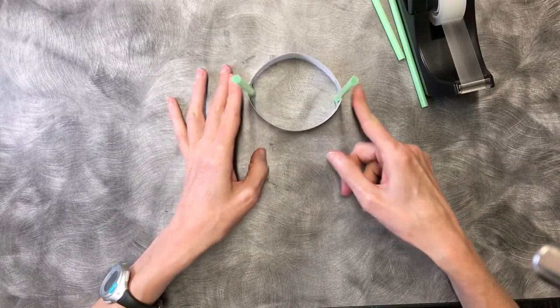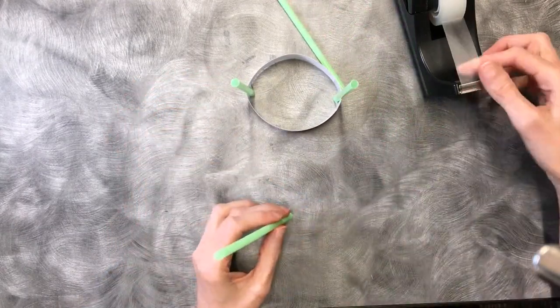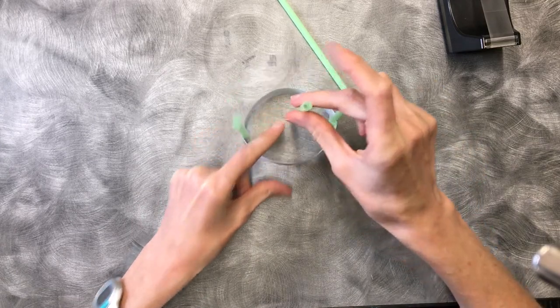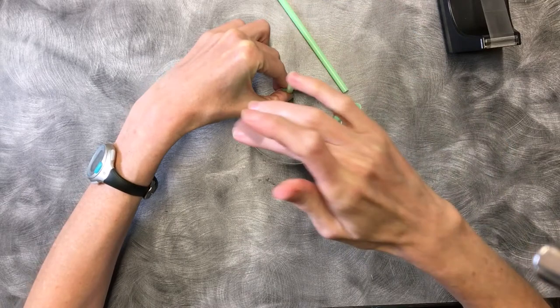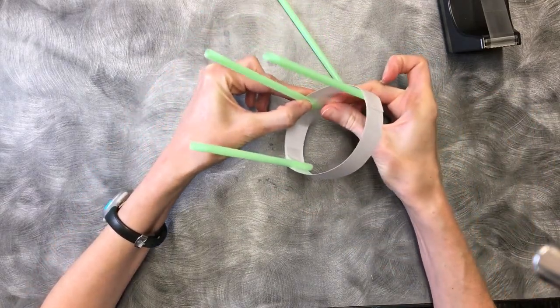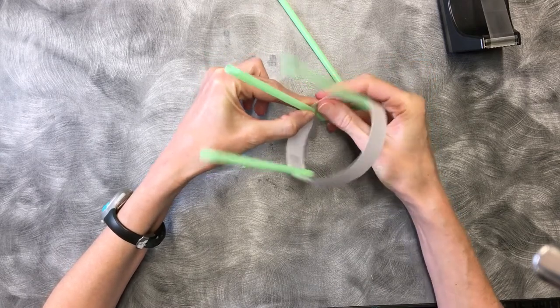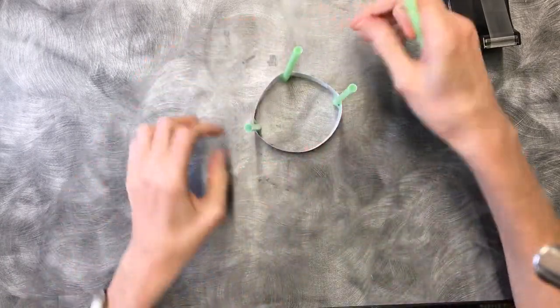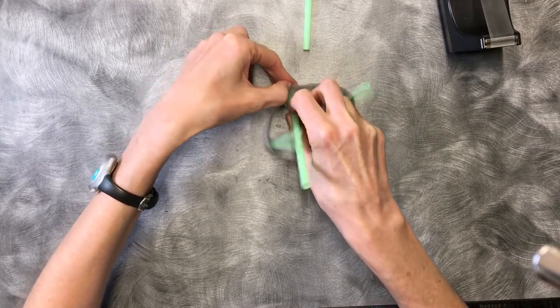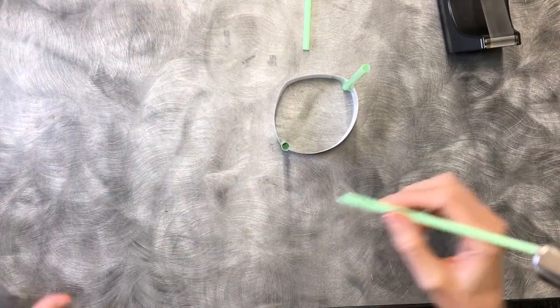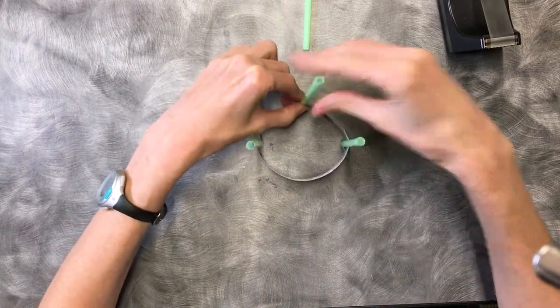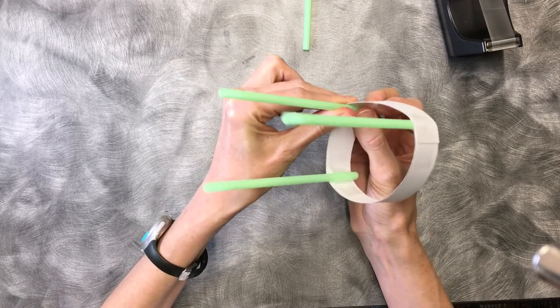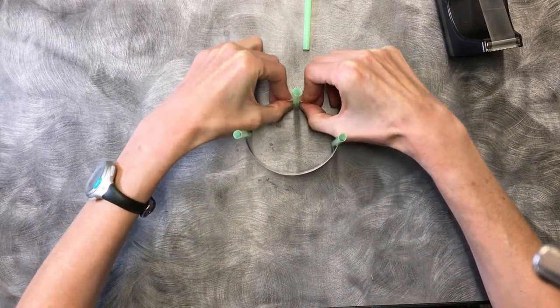Alright so now we have two that are directly across from one another. Grab another one and since we want four equal distance apart we're going to go in between on this side so I can see it in between the two you already taped. If it helps to pick it up it might at this point. Alright that one's actually a little crooked so I'm going to try that one again.